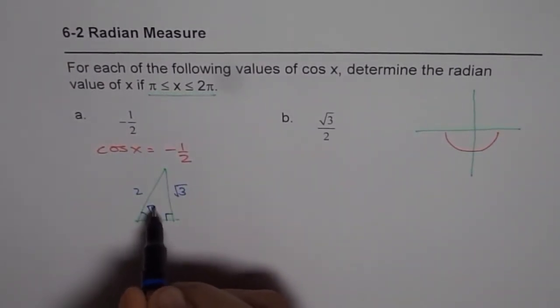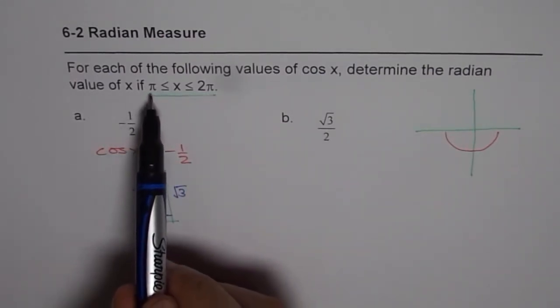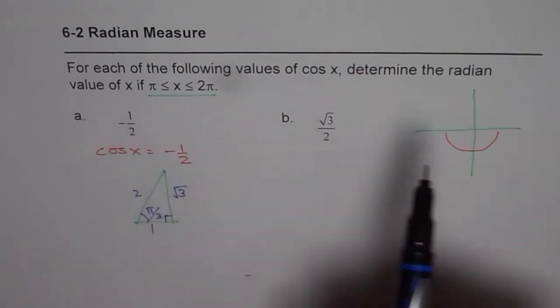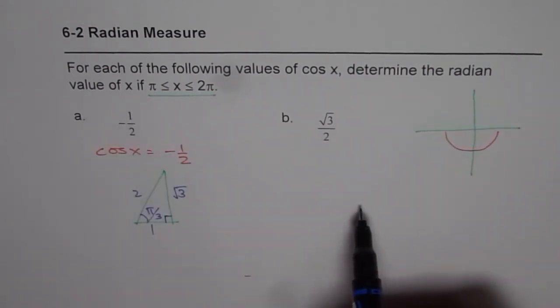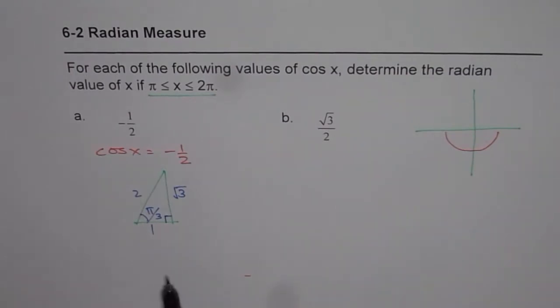Where this angle is π/3. When the domain is between π to 2π, it could be anywhere. Now negative value - you know the CAST rule, right?